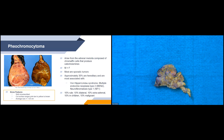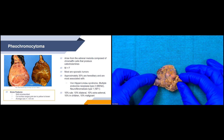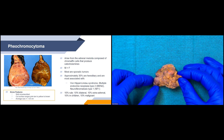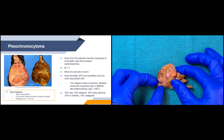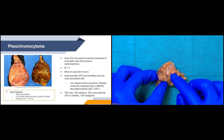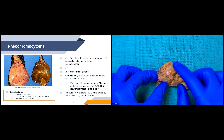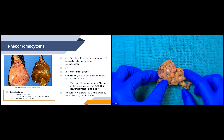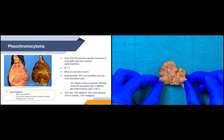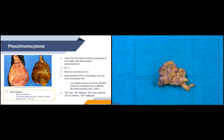Now, after going through all of those differential diagnoses, let's take a look at our specimen today. It's pretty small, and you can see there is a nodule here. Our case today is out for an adrenal cortical adenoma.